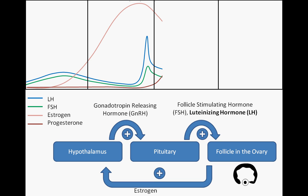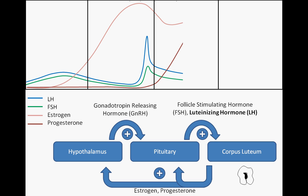Following ovulation, the remaining ovarian follicular tissue where the egg developed becomes known as the corpus luteum, a structure developed and maintained by LH. The corpus luteum, in turn, produces large amounts of estrogen and progesterone. In the uterus, these hormones facilitate the secretory phase of uterine lining development, characterized by further thickening and secretion of a glycogen-rich fluid, which can provide nourishment for an early embryo.